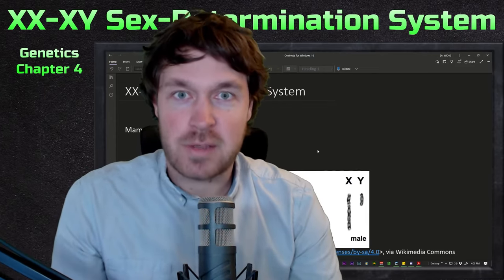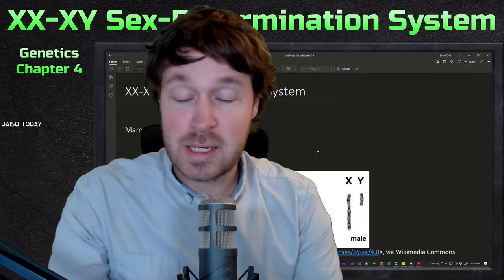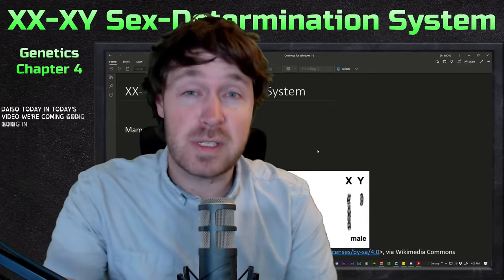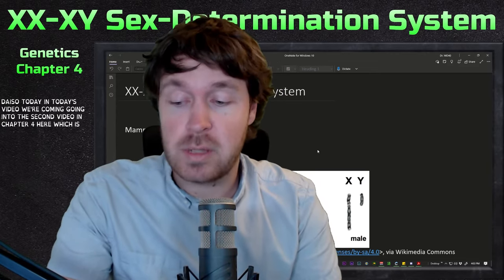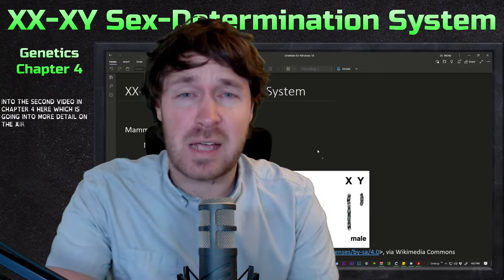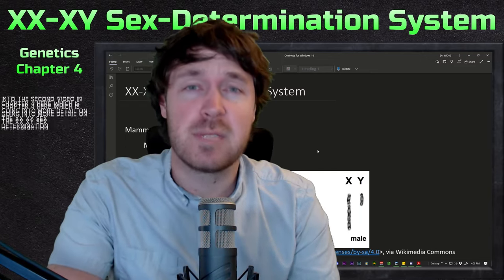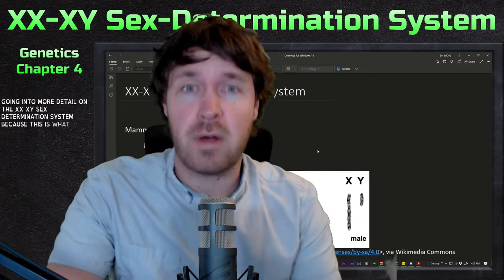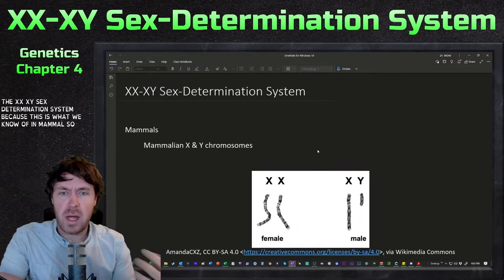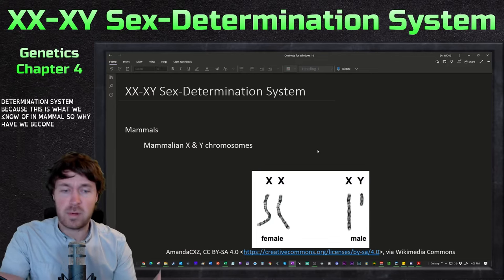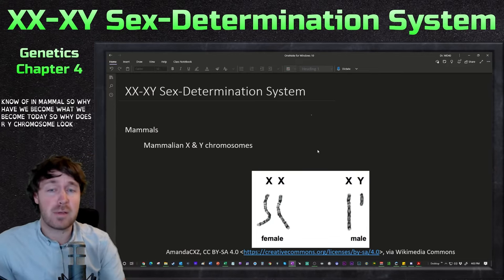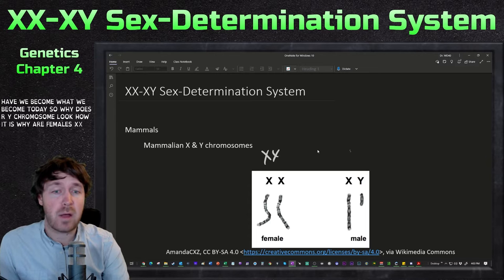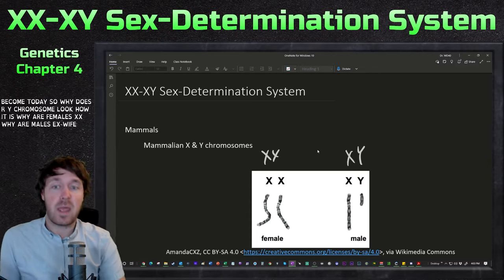Hello everyone, hope you're having a great day. Today we're going into the second video in chapter four, which goes into more detail on the XX/XY sex determination system — what we know of in mammals. Why have we become what we are today? Why does our Y chromosome look how it does? Why are females XX and males XY?